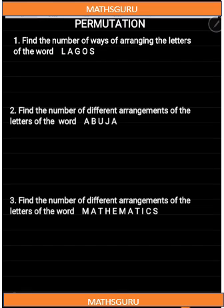Welcome to MarsGuru Educational Services. Today we are going to consider permutation. In our previous class we discussed factorial. Permutation simply means the arrangement of objects or things in a particular order. We are going to consider the aspect of arrangement which has to do with distinguishable objects — that is, objects we can differentiate — and also the aspects of indistinguishable objects, that is, objects we cannot differentiate.